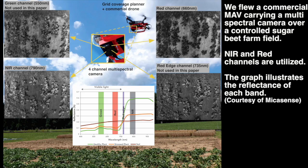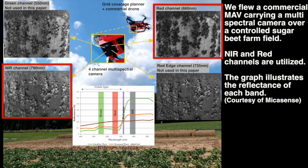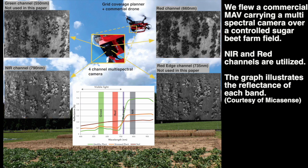A DJI Mavic flies over our experimental field with a 4-band multispectral camera. Although this camera can capture up to 4 bands, we consider only NIR and RED channels due to difficulties in registering images from other bands. The graph illustrates the reflectance of each band for healthy and sick plants and soil.